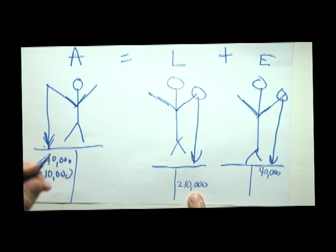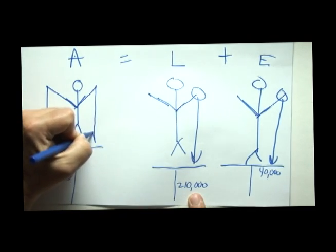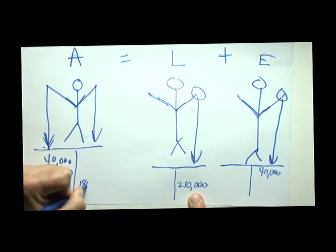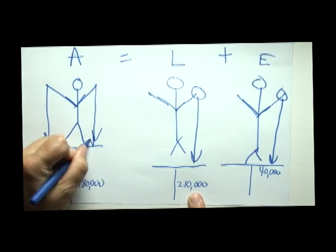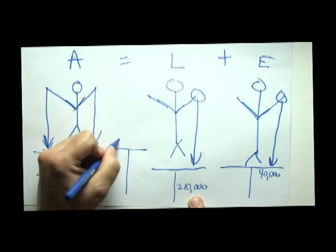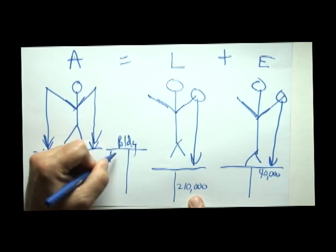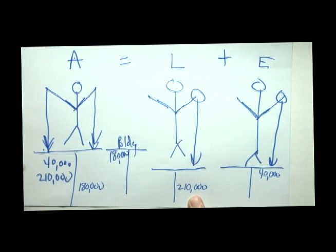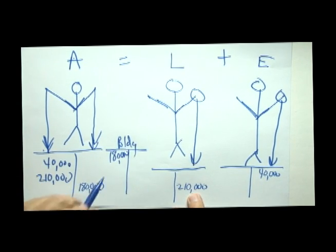Now when we got a loan of $210,000, Andy's hand would go up on the left and the liability hand, here Linda's hand would go up. Because, her natural home is on the right hand side. Now when we bought a building, for cash, Andy's cash went down and so we put the reduction in cash on the right hand side.